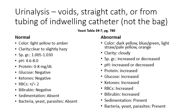Abnormal findings and their indications are detailed in your textbook table 34-7. Blue-green urine typically indicates a Pseudomonas infection. Dark yellow urine is concentrated. Light straw or pale yellow urine is diluted. Orange urine is usually due to certain medications. Cloudy clarity can indicate infection. Changes in specific gravity determine hydration status. Additional diagnostic tests include renal function tests — blood BUN, creatinine, and creatinine clearance.